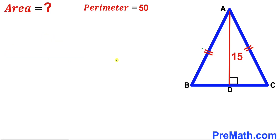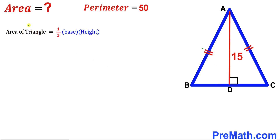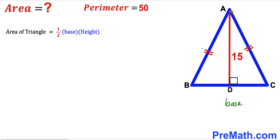Let's go ahead and get started. Since we are interested in calculating the area of this given triangle ABC, let's recall the area of a triangle formula: area is always equal to one half times base times height. In our case, side BC is the base of this triangle whereas the perpendicular AD is the height, and our height is 15 units.